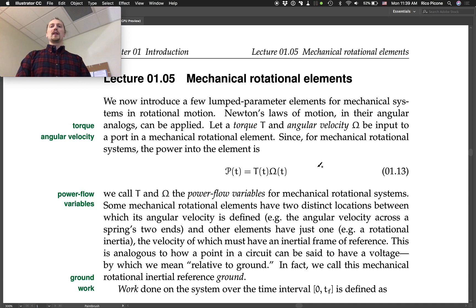Newton's laws of motion and their angular analogs can be applied. Let a torque T and angular velocity omega be input to a port in a mechanical rotational element. Since for a mechanical rotational system, the power into the element is the product of the torque and the angular velocity, we call torque T and omega the power flow variables for mechanical rotational systems.